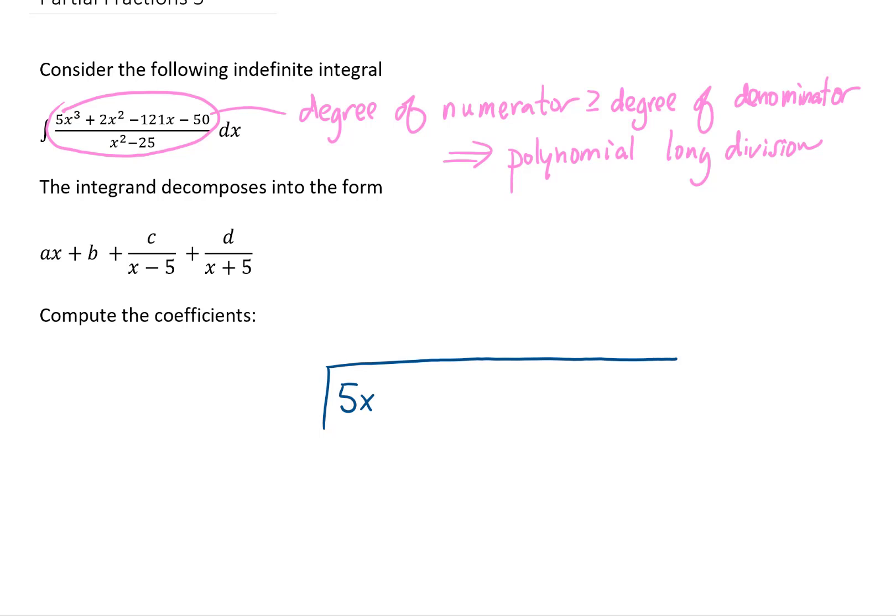If we want to divide that numerator by that denominator, here's how we set it up. Notice that I put a 0x in here where there wasn't an x term. That's just to make sure that I don't mess up my spacing.